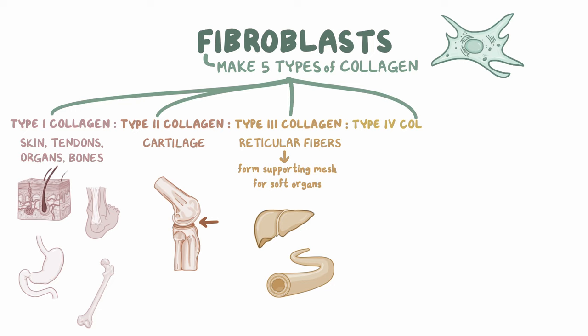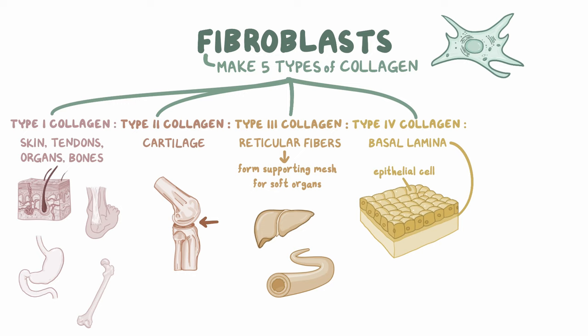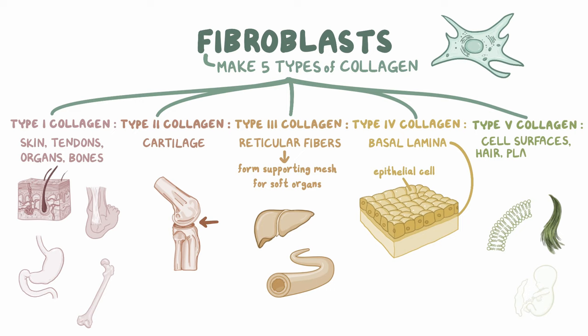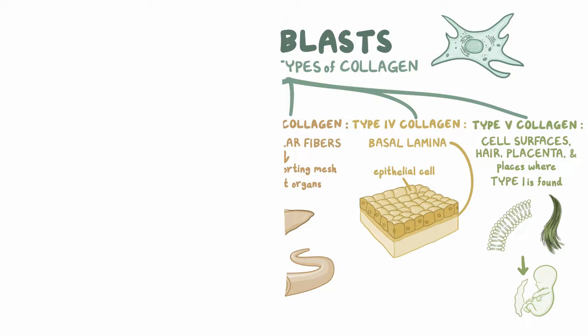Type 4 collagen is found in a foundation called the basal lamina, on which the epithelial cells sit. Finally, there's type 5 collagen, which is in cell surfaces, hair, and placenta, as well as in places where type 1 collagen is found.